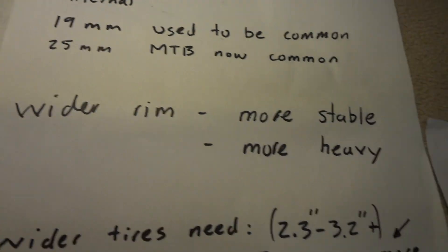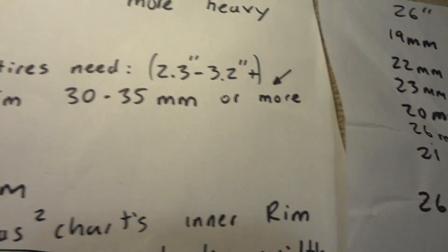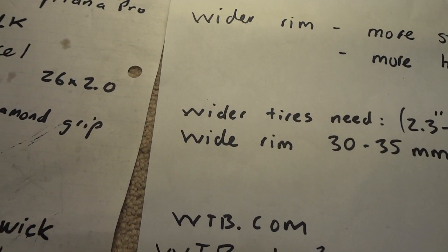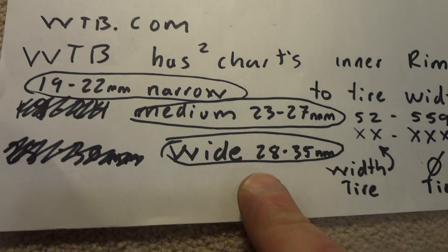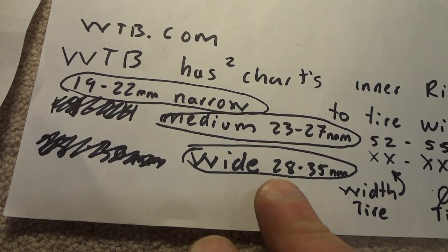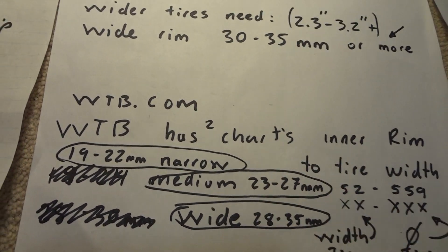In the chart it will explain to you what kind of rim width you need for the width of the tire you want to run.